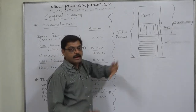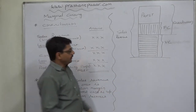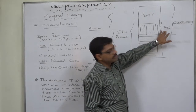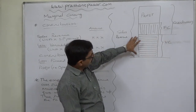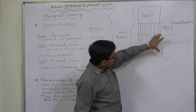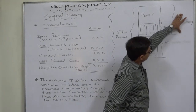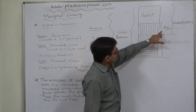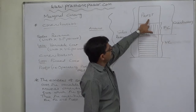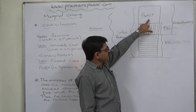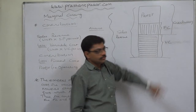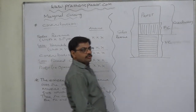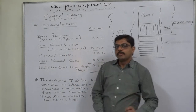In marginal costing, the total cost is segregated into variable cost and fixed cost. From sales revenue, if we write off variable cost, the excess is contribution. From contribution, we write off fixed cost, so the remaining amount — the excess of contribution over fixed cost — is profit. In marginal costing, contribution is a very important concept.